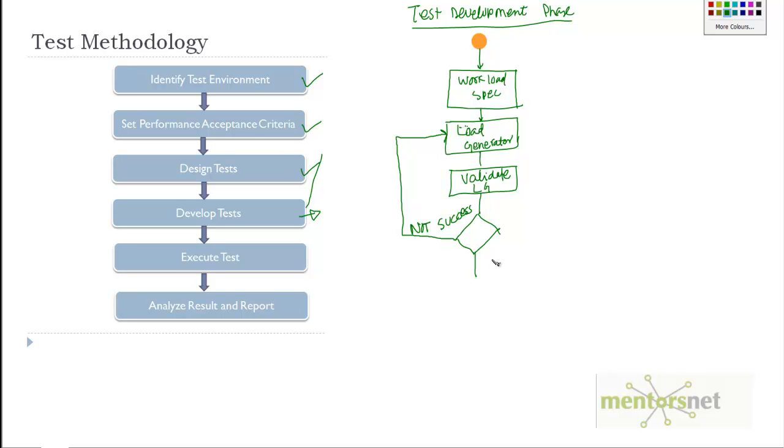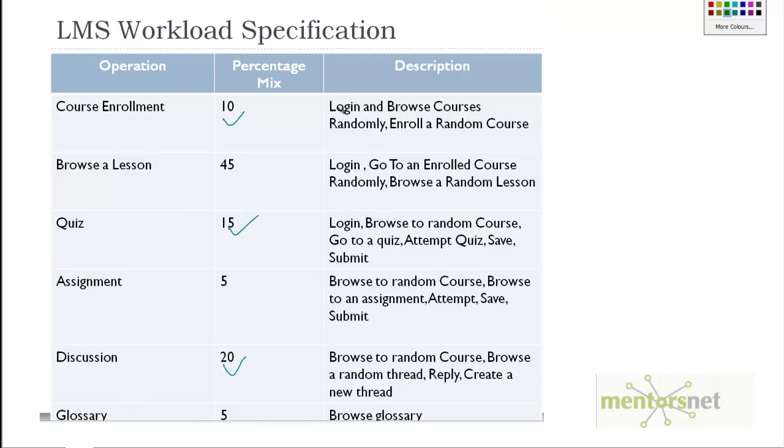If it is successful then we write a program called controller. Essentially the load generator is going to do login, browse course, enroll course. Login is a generator, the name of that program is L1, browse course will be L2, enroll course will be L3, L4, L5, L100.